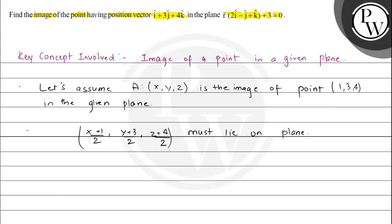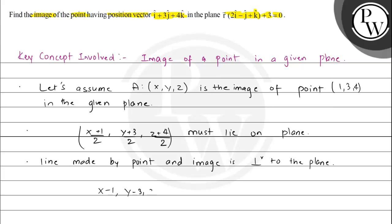The line segment made by the given point and the image point would be perpendicular to the plane. We already know a line perpendicular to the plane — its direction is 2i-cap minus j-cap plus k-cap. So we can say that (x-1, y-3, z-4) equals lambda times (2, -1, 1).